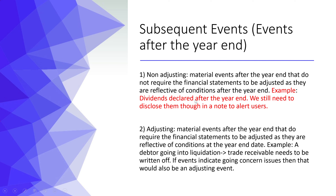An example of a non-adjusting event is a dividend declared after the year-end. Because the dividend was declared after the year-end, we don't recognize the liability — the liability requires a past event — but we still need to alert the users through a note. On the other hand, adjusting events are material events that are reflective of conditions at the year-end and they lead to adjustments in the financial statements.